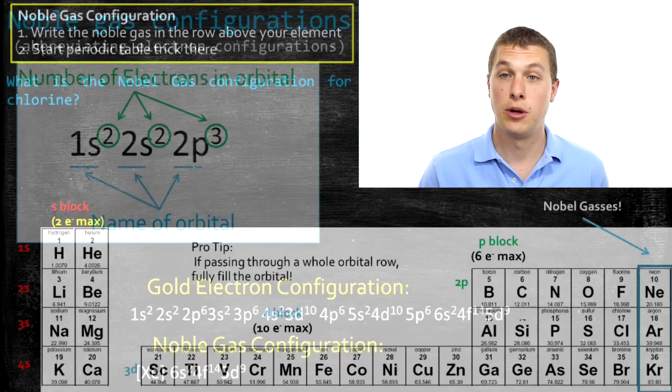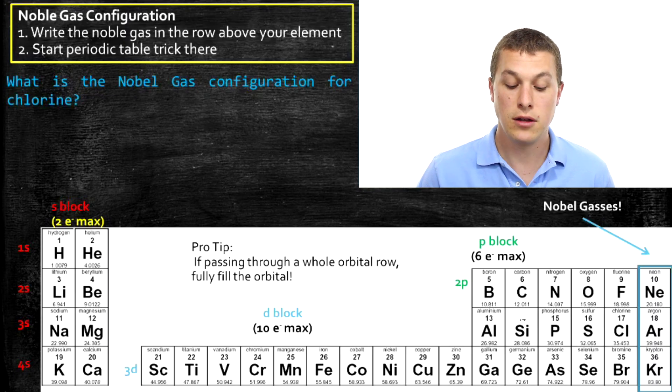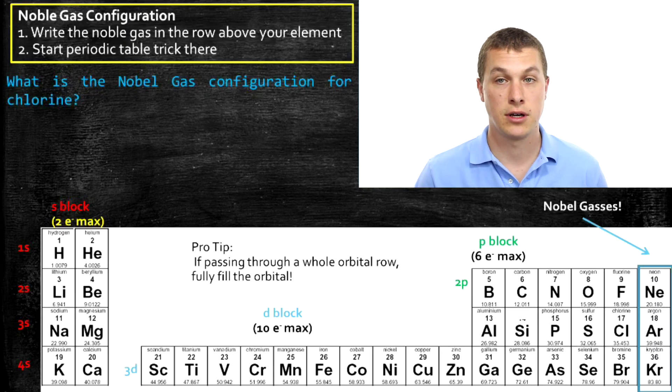So how do we use noble gas configuration? Well, it's pretty simple. What we're going to do is, first, we're going to write the noble gas in the row above the element that you're trying to write an electron configuration for.